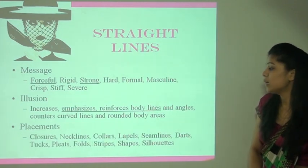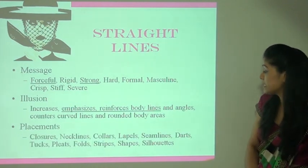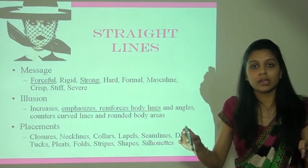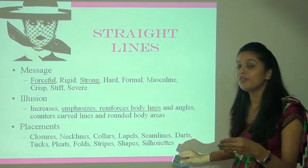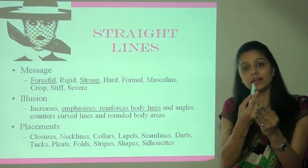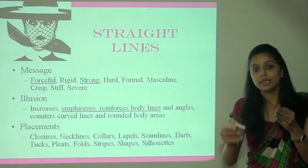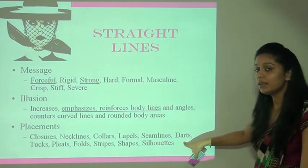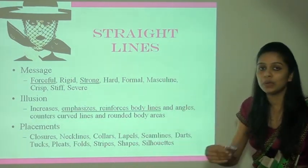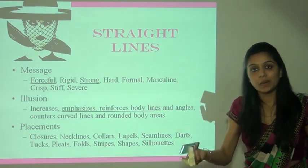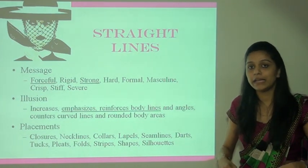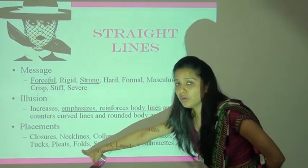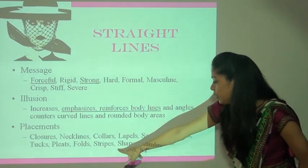Placements for straight lines include closures, necklines, collars, lapels, seam lines, darts, tucks, pleats, folds, shapes, and silhouettes. Darts are mostly used for fitting — hum kuch fabric andar ki taraf insert karke ek stitch lagaate hain, jis se garments ki fitting proper aa jaati hai. Pleats are usually seen in skirts or male trousers near the belt area, and are used for comfortability.